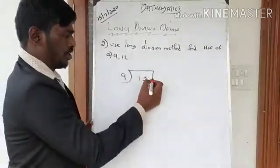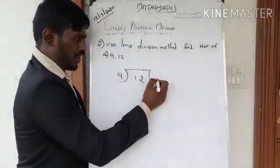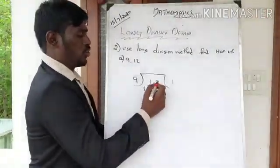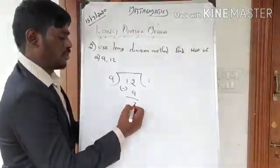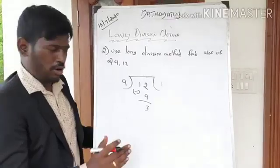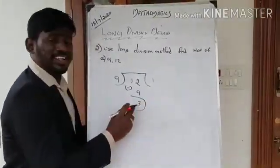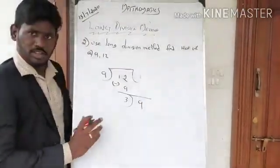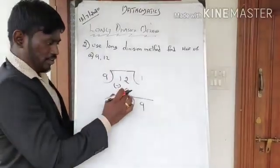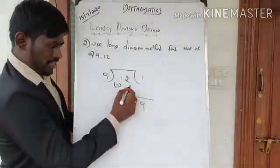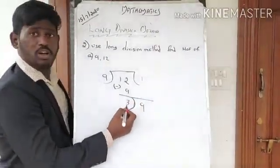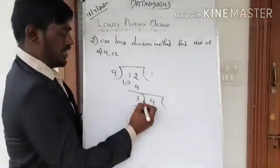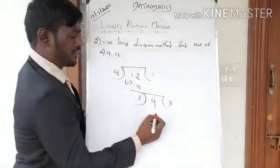In 12, 9 goes one time — 9 ones are 9. Now subtract: 12 minus 9 equals 3. This is very important — you now make this remainder 3 into the new divisor, and the previous divisor 9 becomes the new dividend.